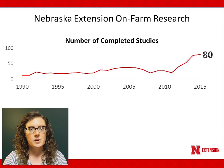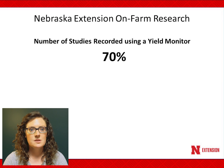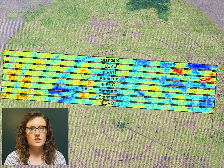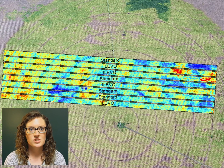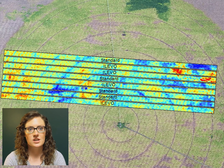In 2015, 80 on-farm research studies were completed. Of these, 70 percent of the studies utilized a yield monitor to record data. Overall, the goal of participants in the Nebraska On-Farm Research Network is to evaluate an alternative production system versus a current system.